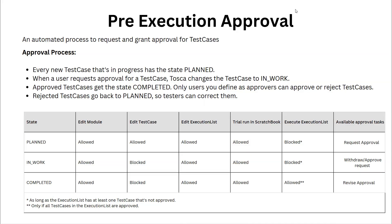Let's understand the approval process. We already know about the work state of a particular test case, and there are three particular states for any test case you are creating: the planned state, the in-work state, and the completed state. You can manually change all these states, but if you use this approval process, then as you approve, don't approve, or withdraw, this will change the status automatically. When pre-execution approval is enabled, only Tosca can make these state changes for your test cases. Every new test case in progress will have a state of planned, and when a user requests approval, Tosca changes the state to in-work. If the test cases are approved, the state is marked as completed.